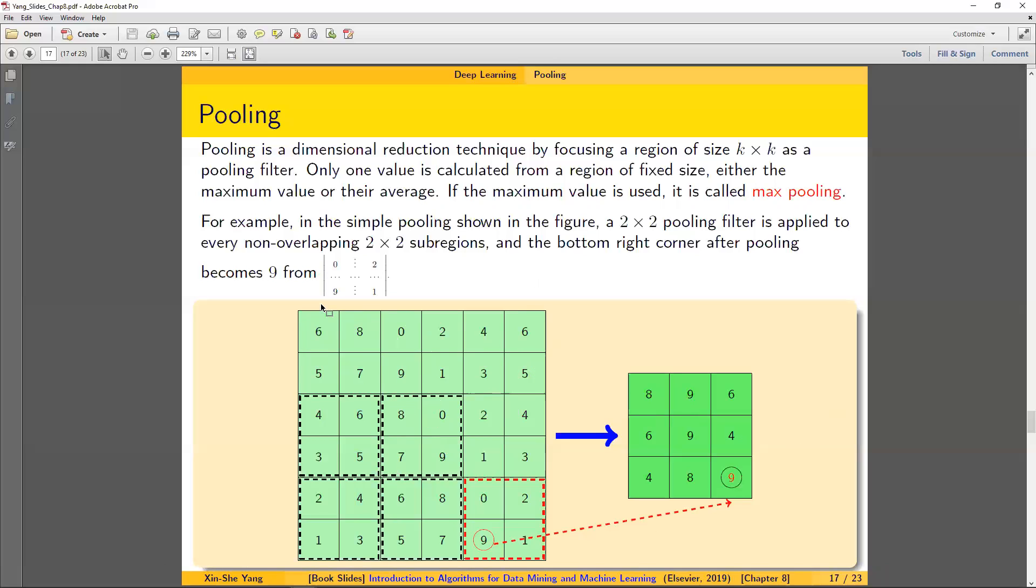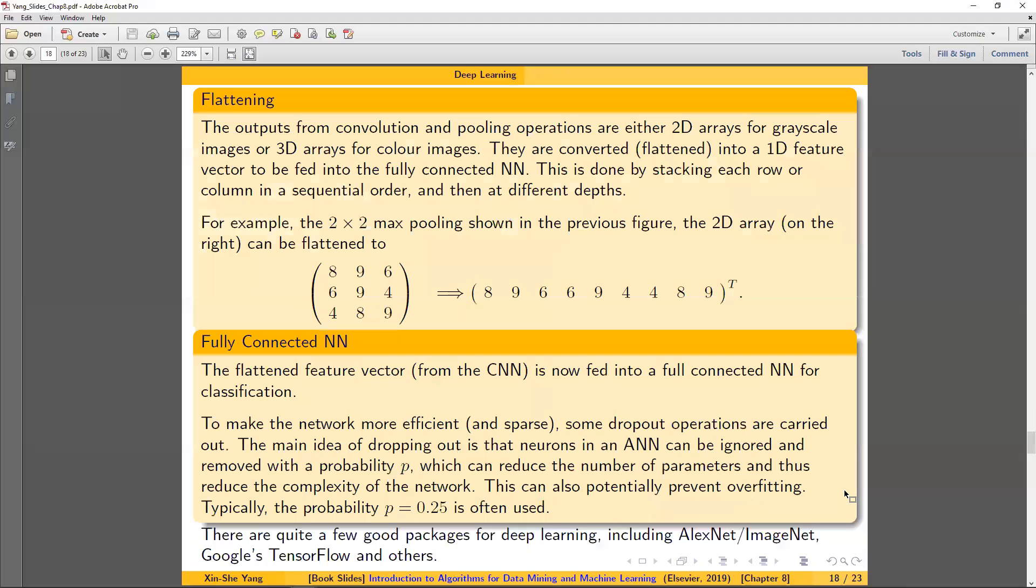That's how you come back with the pooling. And in the pooling, you just get a new matrix that is more like abstraction based on the initial matrix, come back with a smaller number of dimensions. That's our second step. Remember, we have convolution, pooling, and then flattening. Next step would be really flattening. With the matrix that we just had, 8, 9, 6, 6, 9, 4, after pooling, you can do this flattening. It becomes 8, 9, 6, 6, 9, 4, 4, 8, 9.